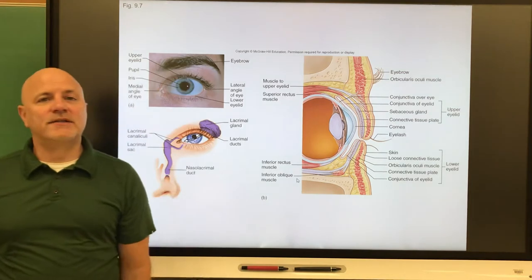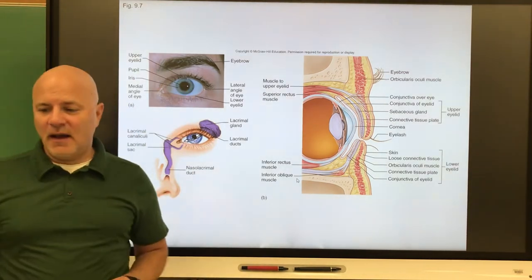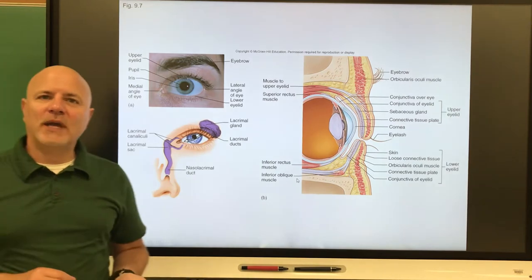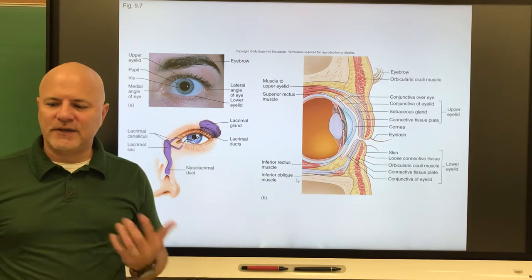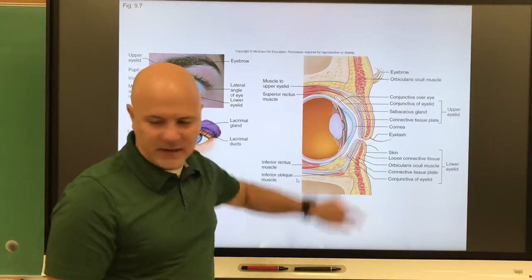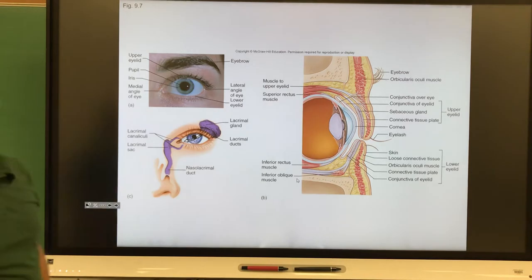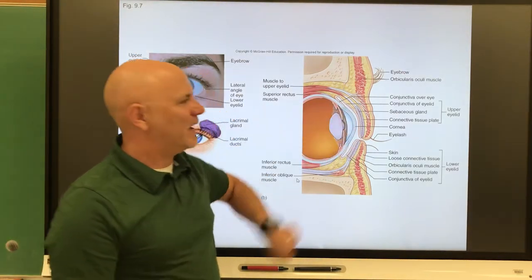All right, so let's look at the eyes. The eyes are the organ of sight. Before we get into talking about the eye itself, let's look at some visual accessory organs. First is the eyelid, right there. This is a protective covering in the eye.